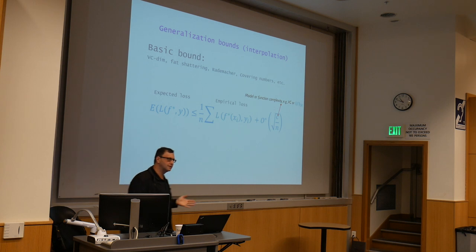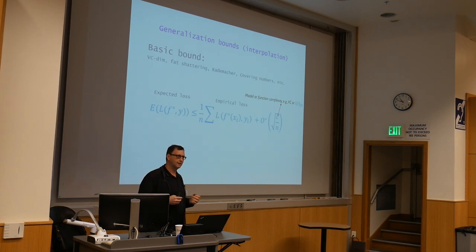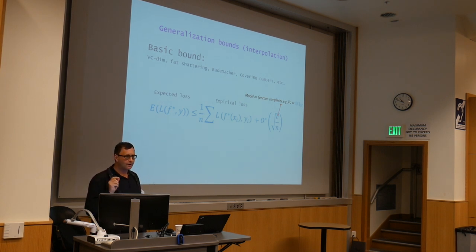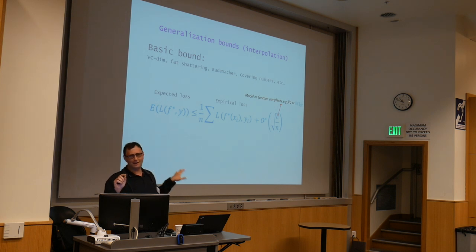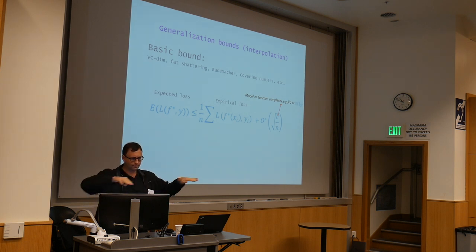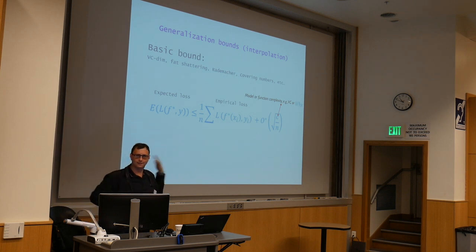If there are any questions, I'm happy to answer. Someone asks what you mean by kernel machine. For kernel machine, I just mean radial basis — an RBF network. You put Gaussian kernels and fit that. It's exactly what Paul had in the previous slide, just a different name. Different communities have different names for the same thing.